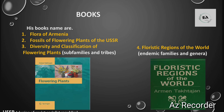Regarding Takhtajan's books: firstly, 'Flora of Armenia'; second, 'Fossils of Flowering Plants of the USSR'; third, 'Diversity and Classification of Flowering Plants,' which discusses sub-families and tribes. Here, tribes in classification refer to a level above genus and below family and sub-family. The fourth book is 'Floristic Regions of the World,' in which Takhtajan discussed endemic families and genera. Endemic families means native or local families.